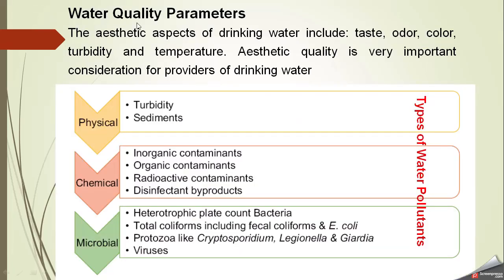Water quality parameters are divided into three parts: number one, physical; number two, chemical; and number three, microbial or microbiological. Under physical, we discuss turbidity, sediments, and color. Under chemical, we cover inorganic and organic materials. Under microbial, there are bacteria, heterotrophic plate count bacteria, coliform bacteria, viruses, algae, and others.